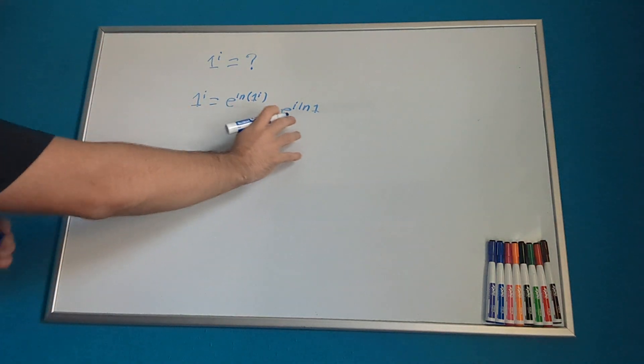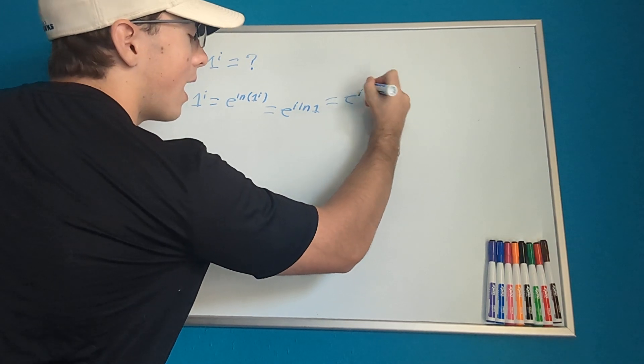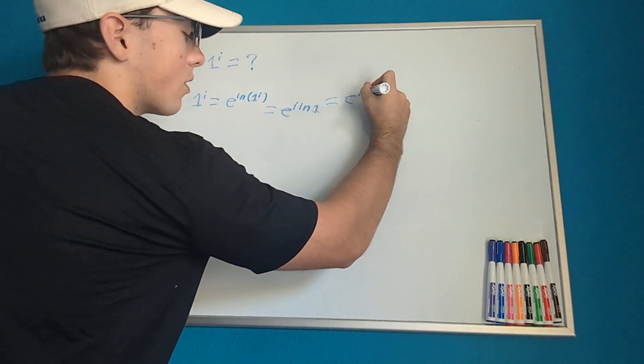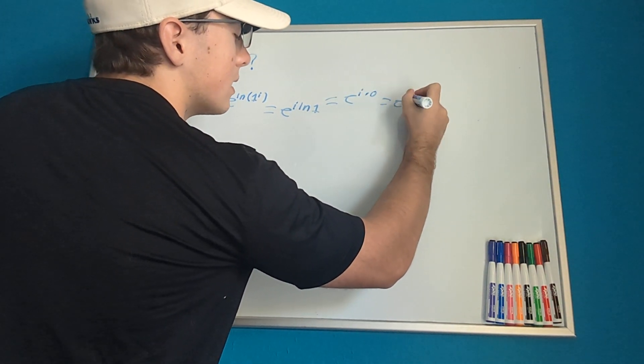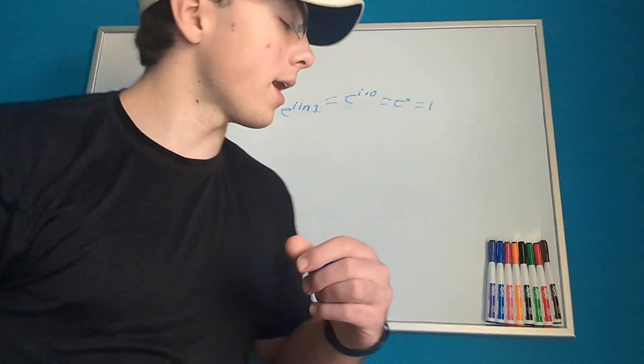Now we have two options at this point. We can just say that this equals e to the i times natural log of 1, which is 0, which just equals e to the 0, which equals 1. So here it does equal 1. So that's good.